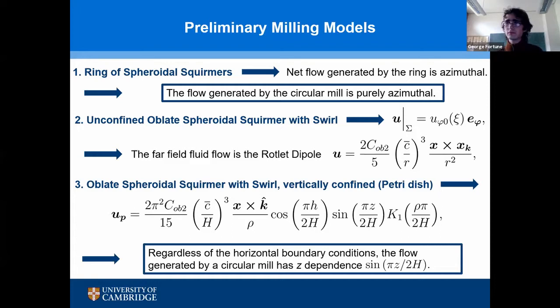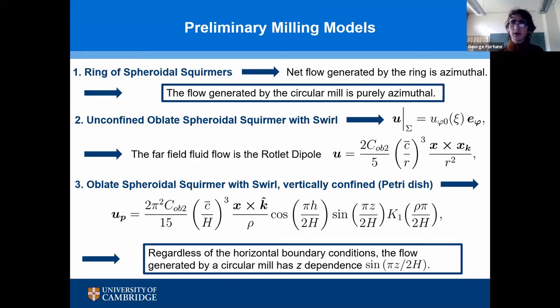Alternatively, another picture is to consider the circular mill as a single object: an oblate spheroidal squirmer rotating with swirl. Using a similar approach, when this object is placed unconfined in 3D space the far-field fluid velocity field takes the form of a toroidal dipole. Furthermore, when placed in vertical confinement — between a bottom rigid boundary and a top free surface as in a petri dish — after a fun algebraic interlude through the method of images, Fourier transforms, and contour integration, we arrive at a resulting fluid velocity field.